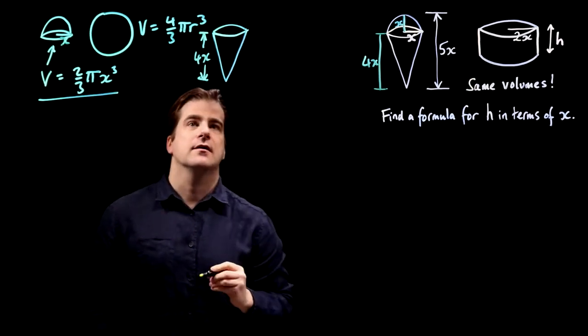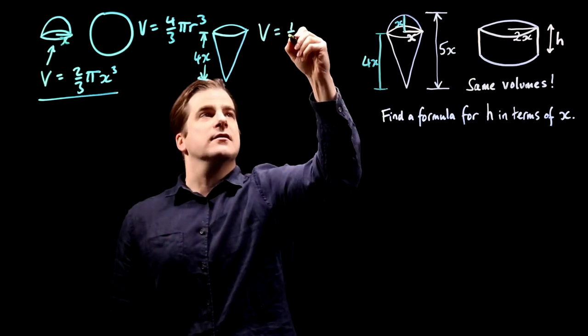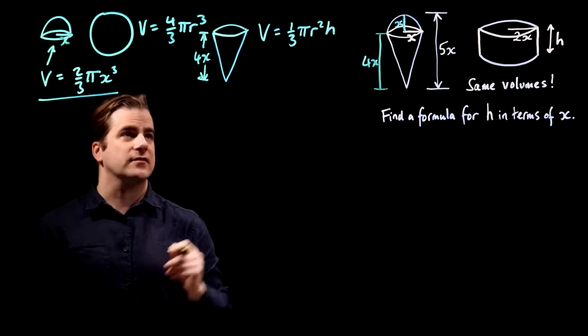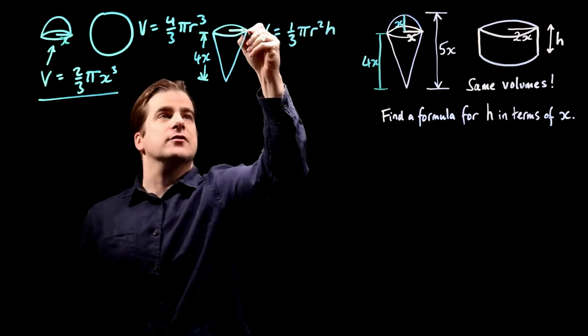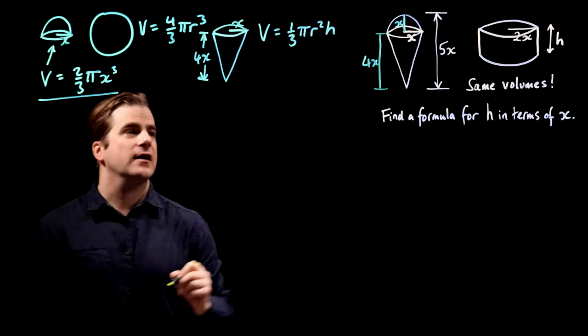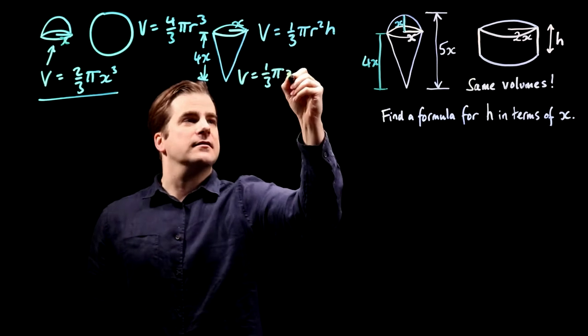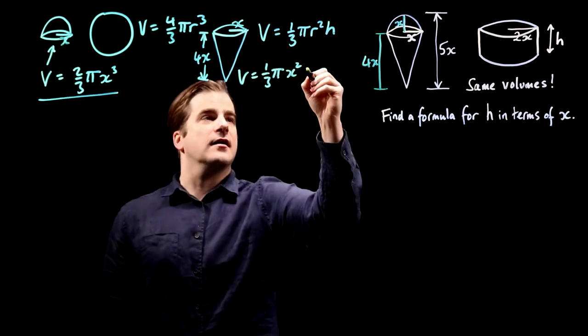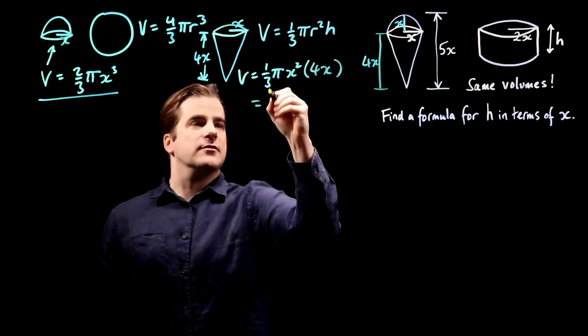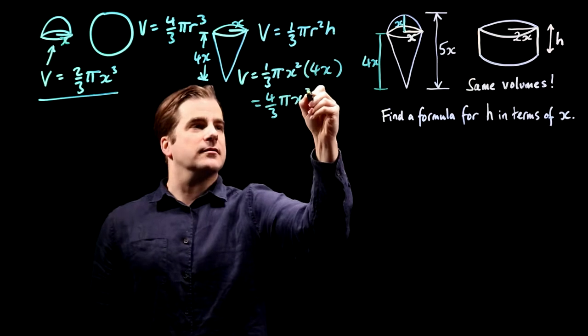Now the volume for a cone, the formula is 1/3 π r² h. And our radius is of course x, and the height is 4x. So therefore, our volume is 1/3 π r², that's x² times the height times 4x, which is 4/3 π x³.